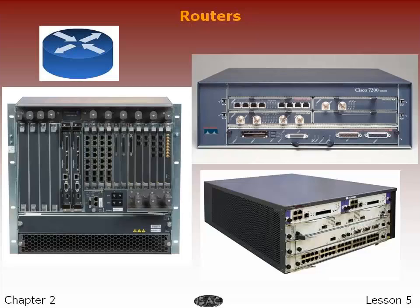A three-layer model is in common use, though not all layers need be present in smaller networks. Access routers, including small home office models, are located at customer sites such as branch offices that do not need hierarchical routing of their own.